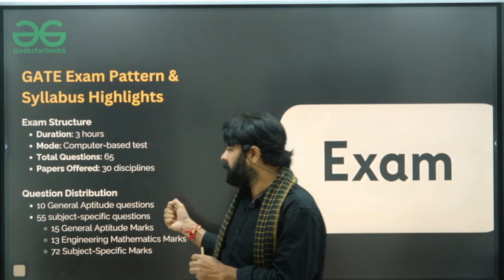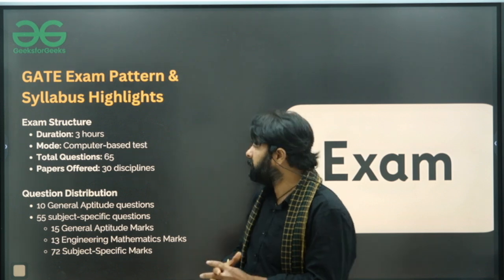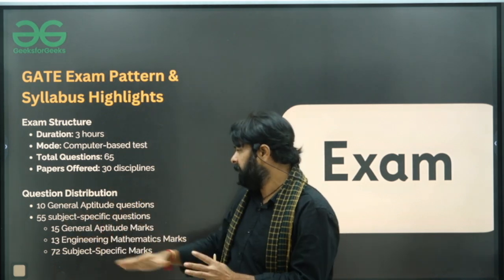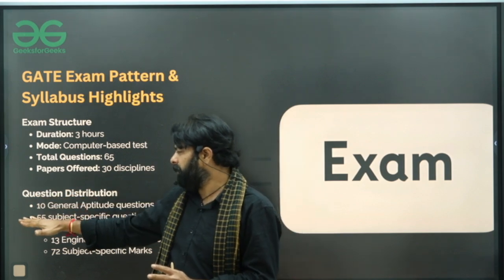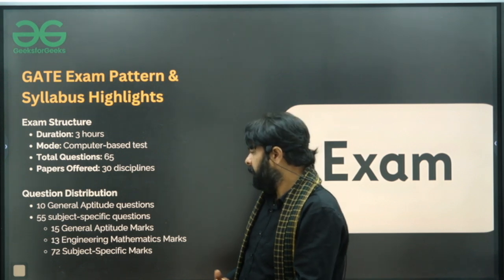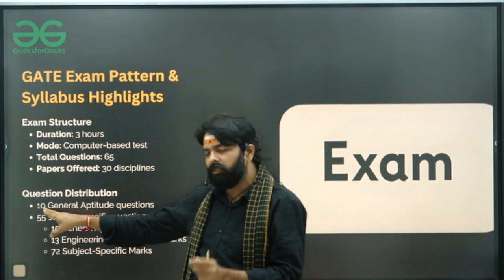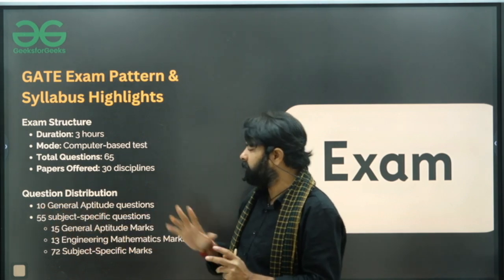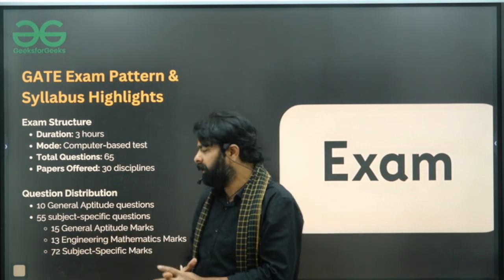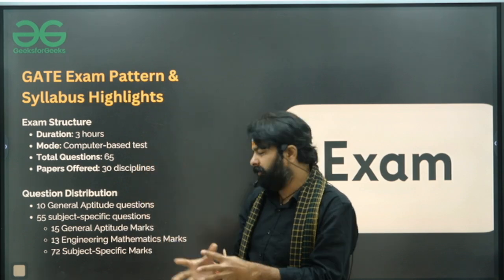The distribution of questions: 10 questions are given to general aptitude. The total is 100 marks — out of which, 10 questions (15 marks) are for general aptitude, 13 marks are for mathematics, and 72 marks are for subject-specific technical questions. Overall there are 65 questions in the GATE exam.